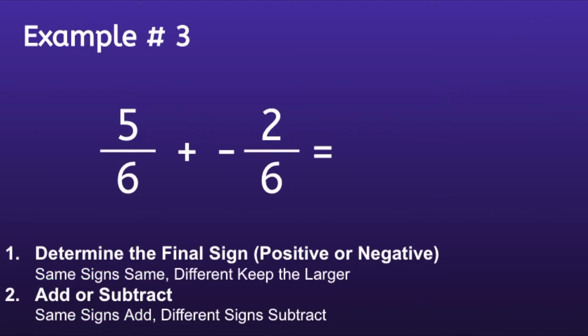Example number three: 5 sixths plus negative 2 sixths. Step one: Determine the final sign. Since I have one number that's positive and one number that's negative, we will use 'different keep the larger,' which means we keep the sign of the number with the greater absolute value. We can determine this by ignoring the negative sign — which number is bigger, 5 sixths or 2 sixths? If you said 5 sixths, you are correct. And since that is a positive number, our answer will also be positive.